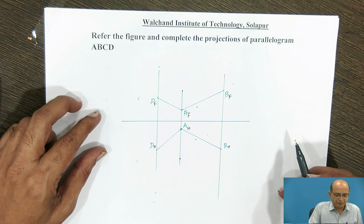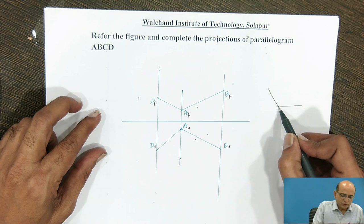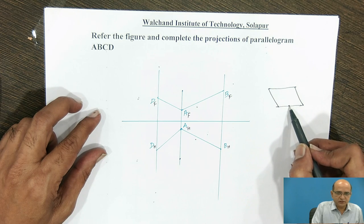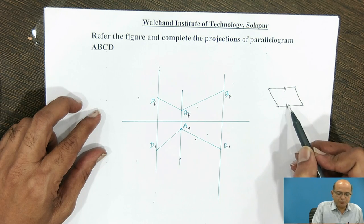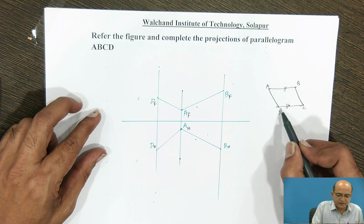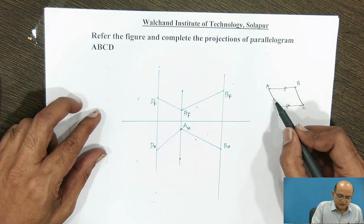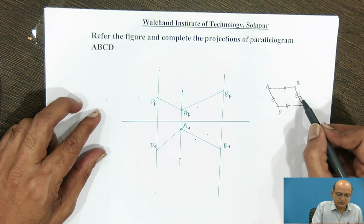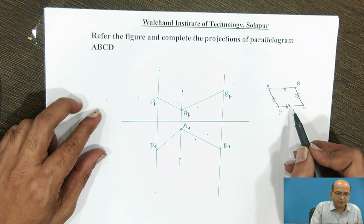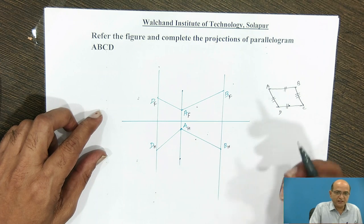As we know, for a parallelogram, two opposite lines are of the same length and are parallel to each other. For example, AB and CD are parallel to each other and of the same length. Similarly, the other sides AD and BC are again parallel to each other and of the same length. We are going to use this concept, along with the knowledge of parallel lines, to complete this figure.